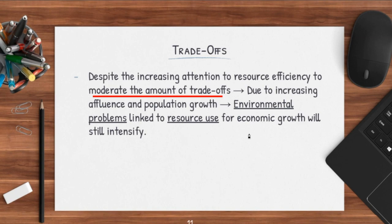Despite increasing attention to resource efficiency to moderate the amount of trade-offs, due to increasing affluence and population growth, environmental problems linked to resources for economic growth will still intensify. This is basically saying that when I want to pursue economic growth, even with technology to reduce all the trade-offs to my environment, it's still impossible — your environmental problems will still continue to grow if you keep focusing on economic growth, which is unsustainable. This is why you have things like sustainable development goals, which international organizations actually try to pursue in order to ensure that every country tries to achieve sustainable growth and sustainable development.